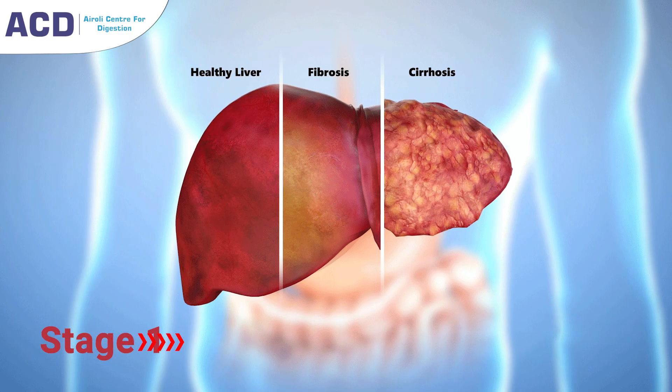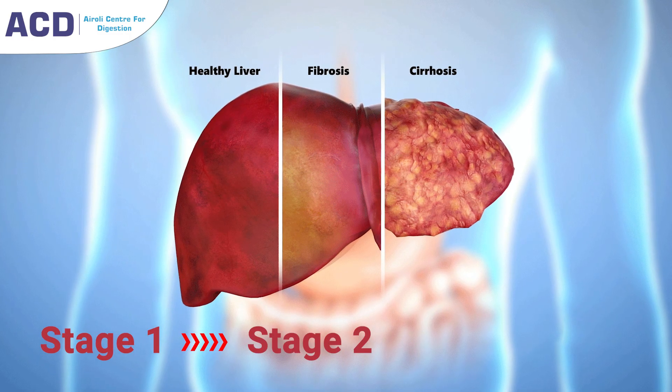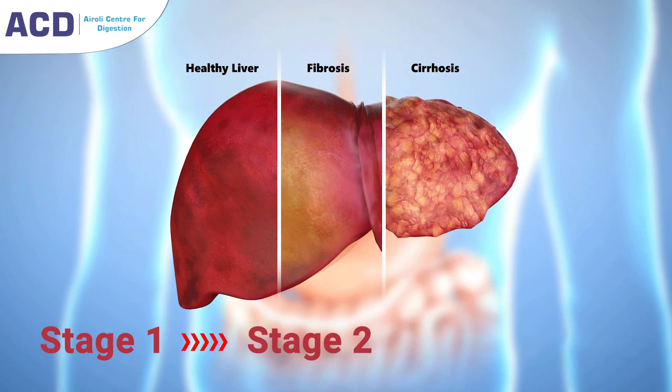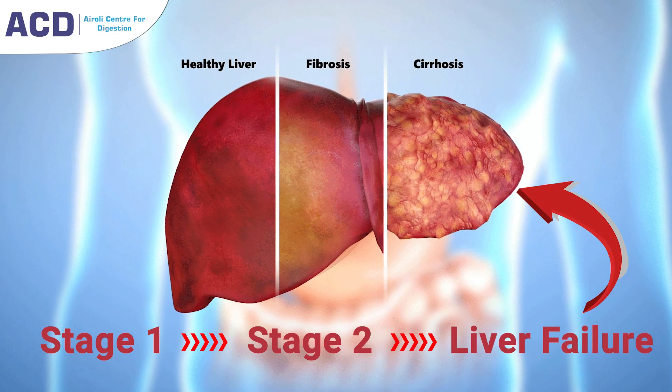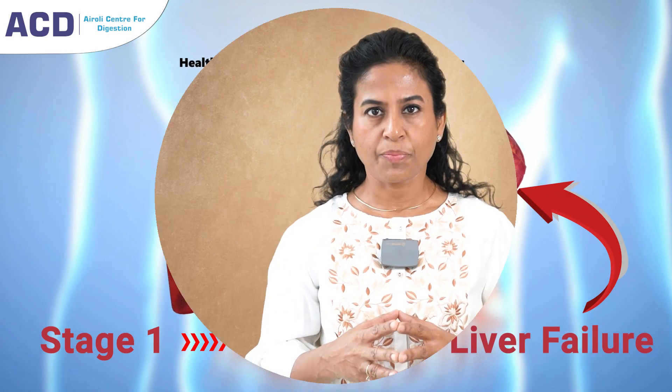Toxins of alcohol or toxins of sugar over time, like 10 to 12 years, cause constant liver cell damage. The damage and repair cycle goes on for 10 to 12 years, and fibrosis happens. When this fibrosis reaches stage one or stage two, it changes the liver structure and results in liver failure, known as liver cirrhosis.